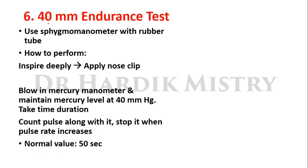The last respiratory efficiency test is the 40 mm Hg endurance test. Use a sphygmomanometer with a rubber tube without the Riva-Rocci cuff. Tell the subject to inspire deeply, apply a nose clip or close the nose, then blow air into the mercury manometer and maintain the mercury level at 40 mm Hg. Record the duration for which the subject maintains this level. Meanwhile, count the pulse — when the pulse rate increases, tell the subject to stop. Normal value is 50 seconds.